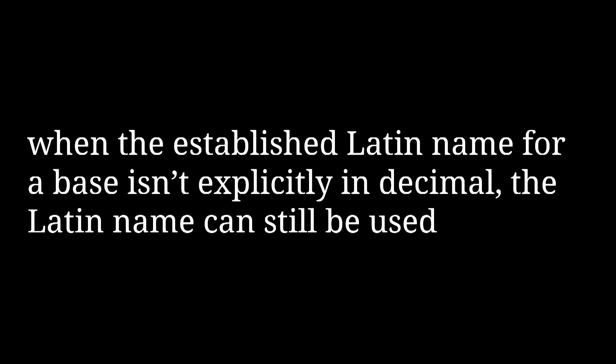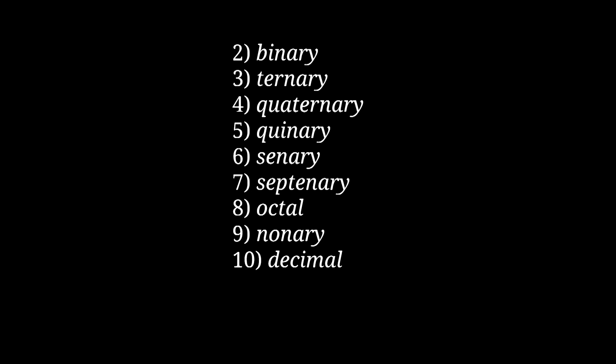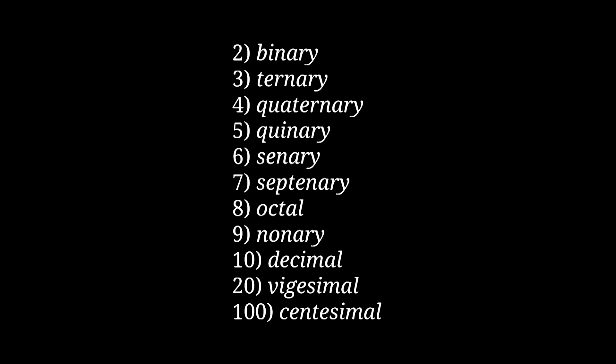For bases where the existing Latin name isn't super explicitly decimal, their names can just still be from Latin. This includes all the bases up to 10, plus vigesimal for base 20 and centesimal for base 100. There's also a few where instead of the more traditional Latin name, I went with an alternative I think is easier to understand — specifically, trinary instead of ternary for base 3, and seximal and septimal instead of senary and septenary for bases 6 and 7.